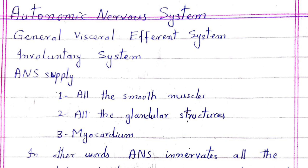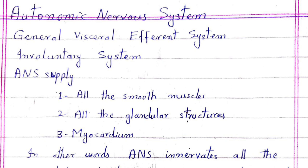ANS supplies all the muscles, all the glandular structures, and myocardium. In other words, ANS innervates all the innervated structures in the body except neuromuscular junction of skeletal muscles.